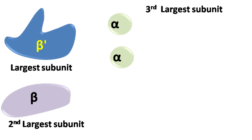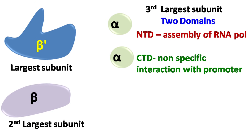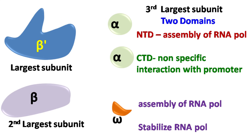Alpha 1 and alpha 2 are the third largest subunits. Each of the alpha subunits has two domains: the N-terminal domain and the C-terminal domain. The N-terminal domain has a role in the assembly of the RNA polymerase enzyme, while the C-terminal domain has a role in interaction with the promoter and non-specific binding to the DNA sequences. The omega is the smallest subunit and facilitates the assembly and stabilizes the RNA polymerase enzyme.